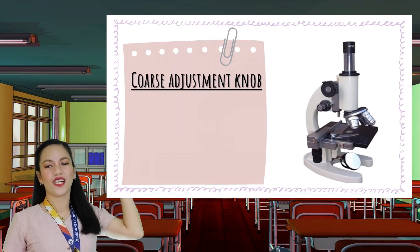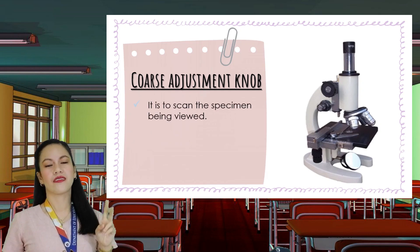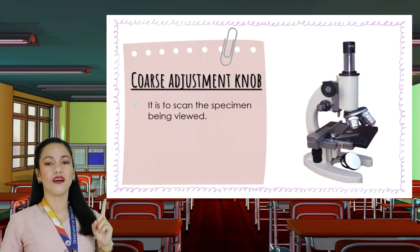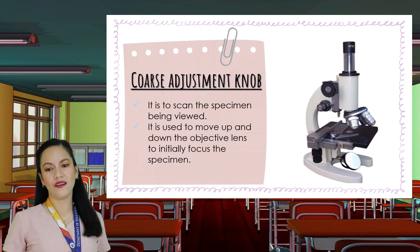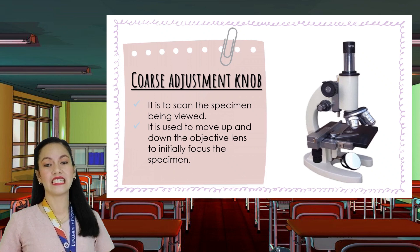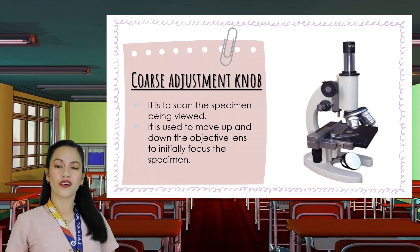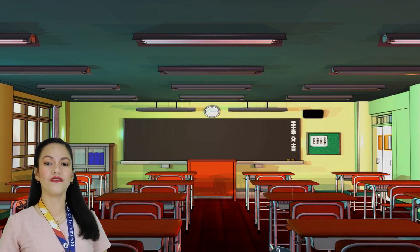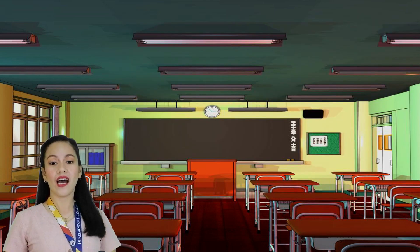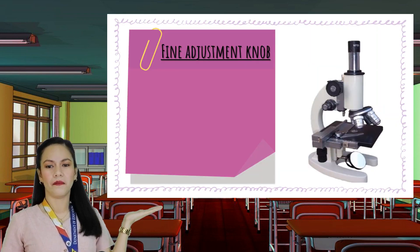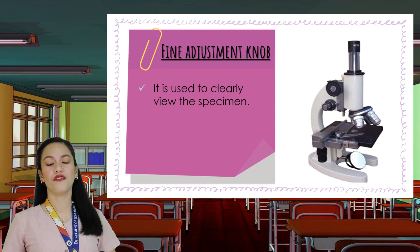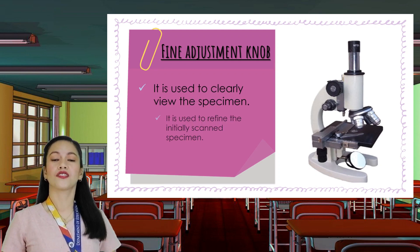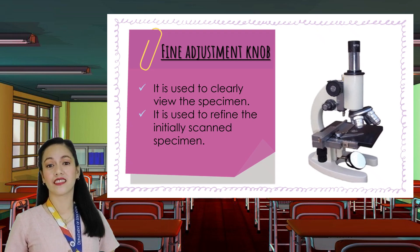On the upper part of the arm are two adjustment knobs. The first is the coarse adjustment knob, used for moving the objective lens up and down to attain an initial focus on the specimen, making scanning possible. The smaller knob below is the fine adjustment knob, used to clearly view the specimen and refine the initially scanned specimen.